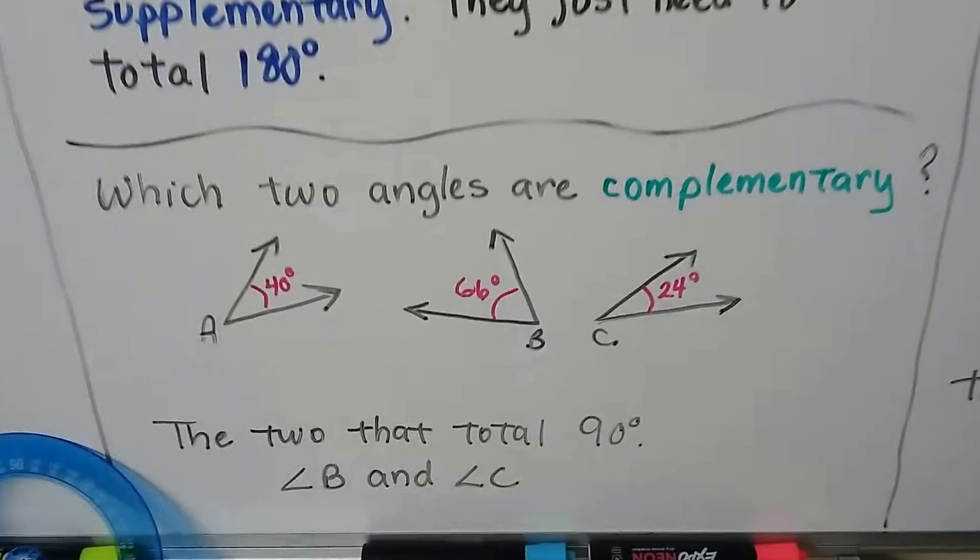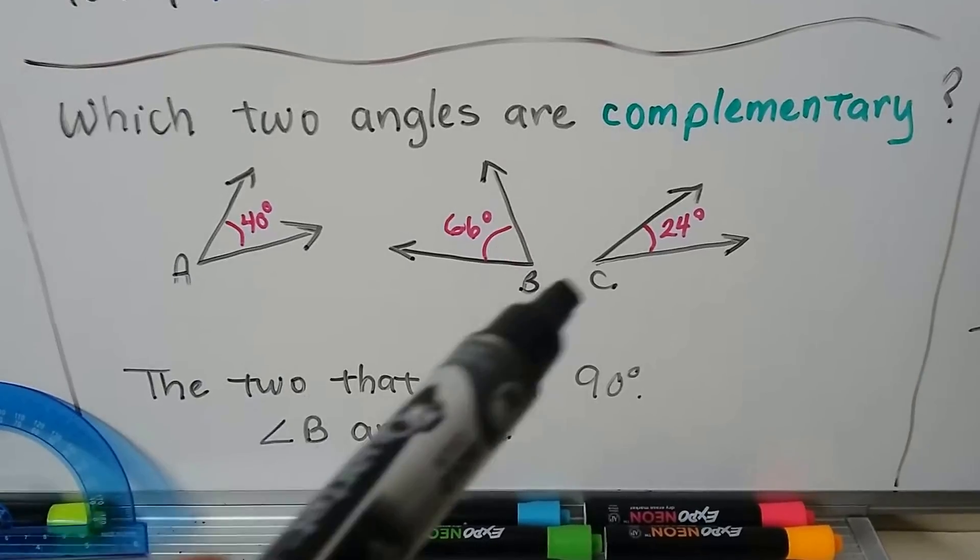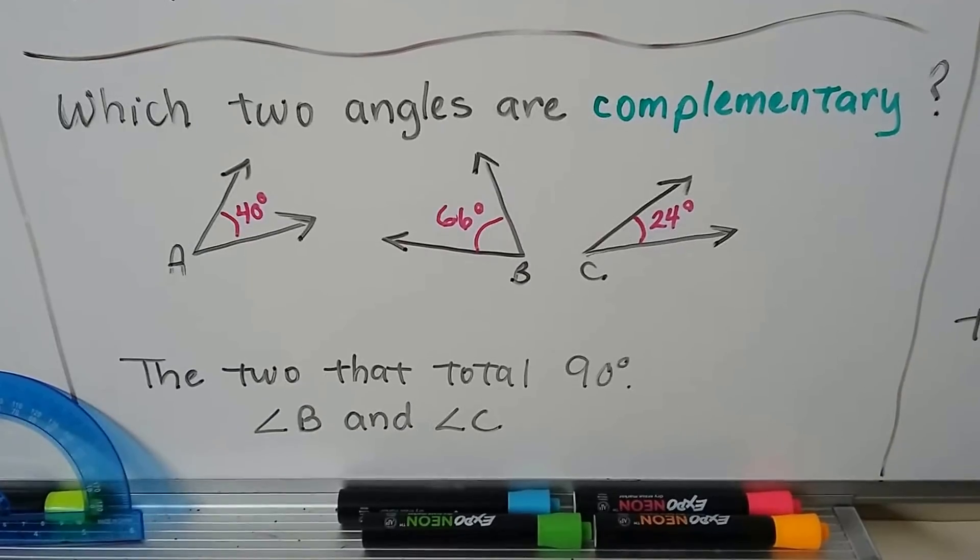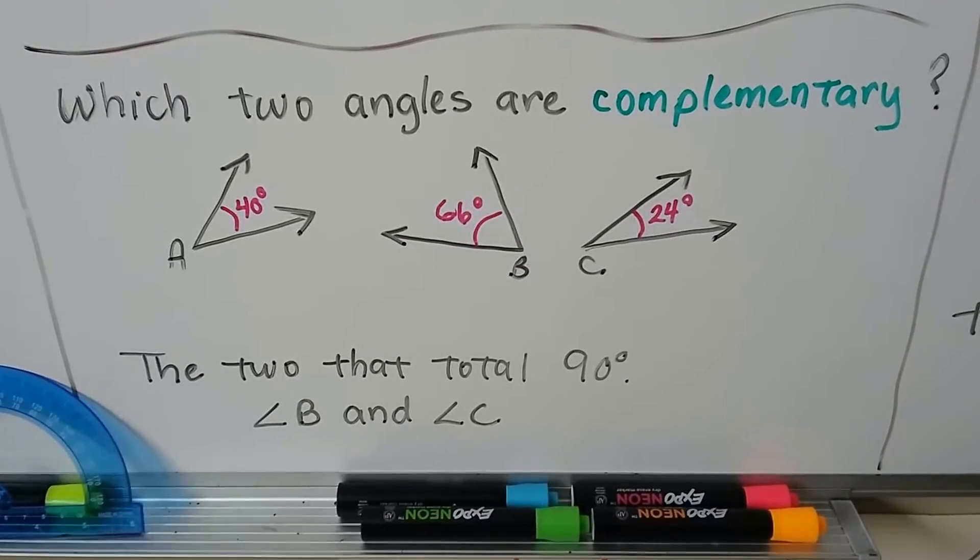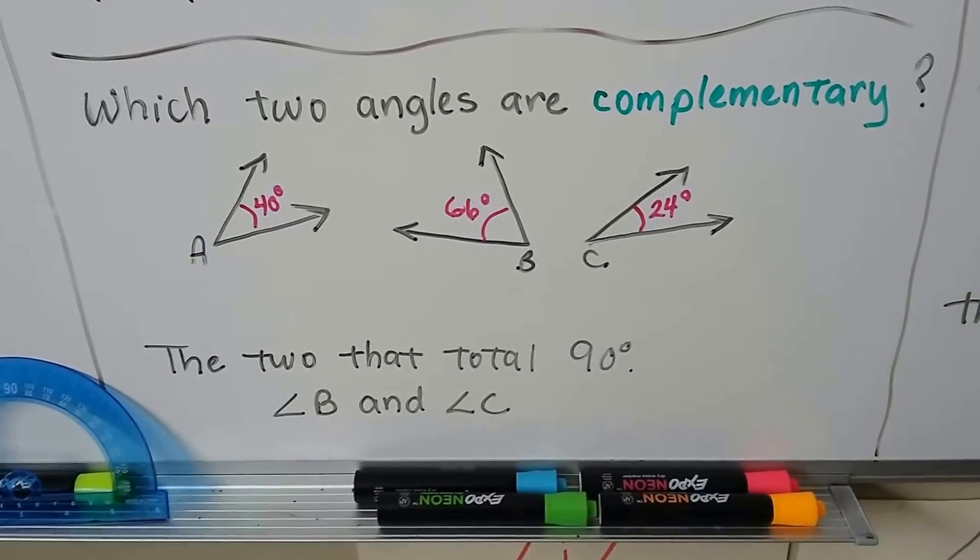So which two angles here are complementary? We have angle A, angle B, and angle C. Which of these two would be considered complementary? It would be B and C. 66 plus 24 equals 90.